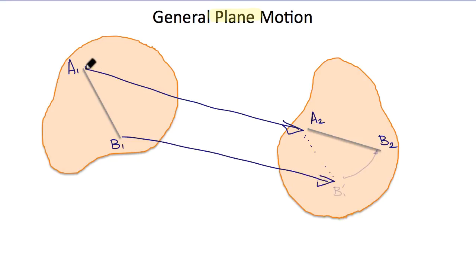So the translation we can show is the vector connecting A1 to A2, and there's a parallel vector connecting B1 to B1 prime. Then to get from B1 prime to B2, this must be a rotation.